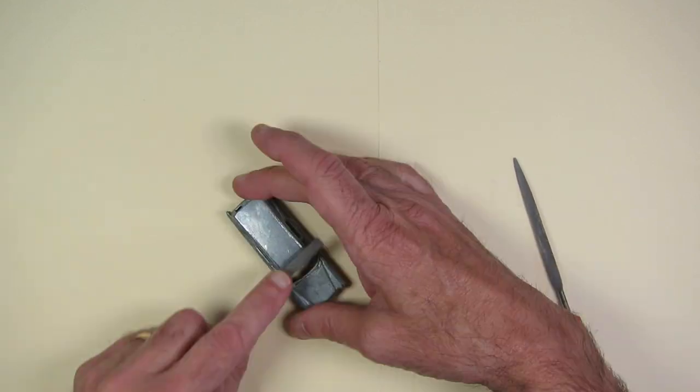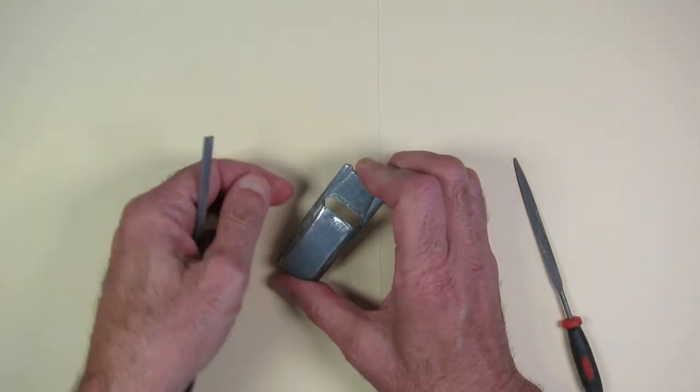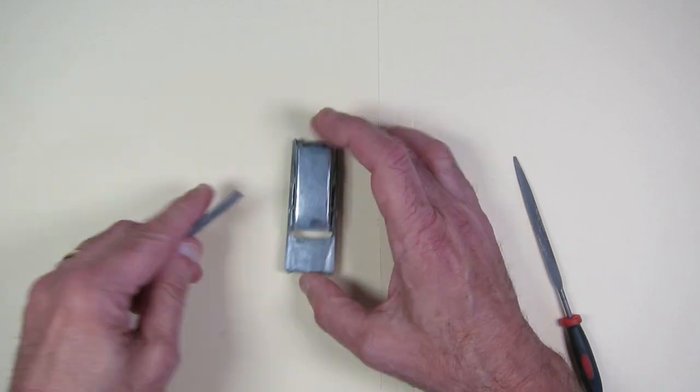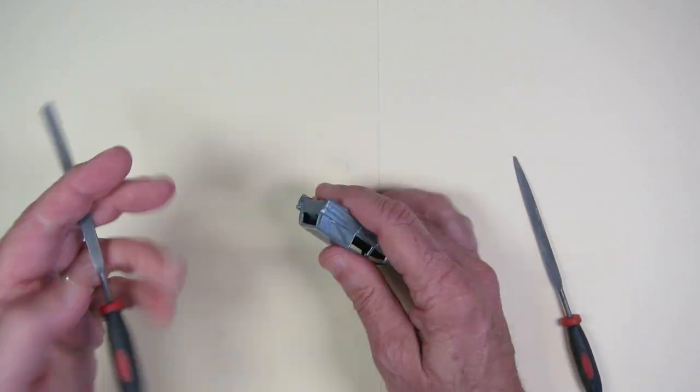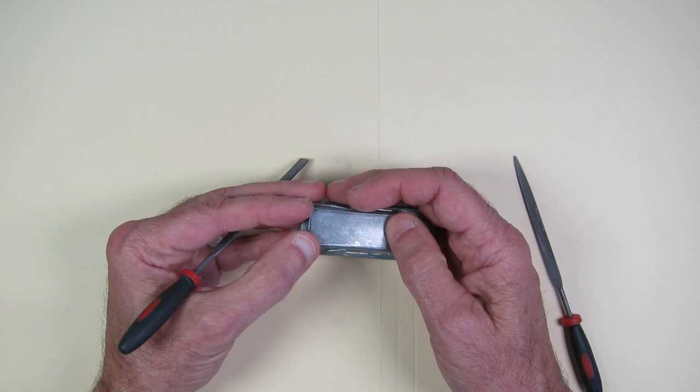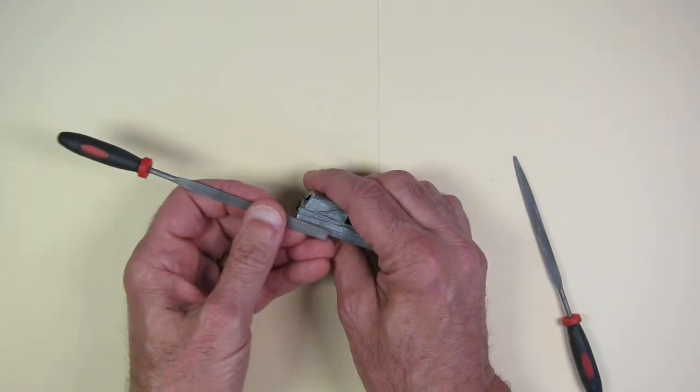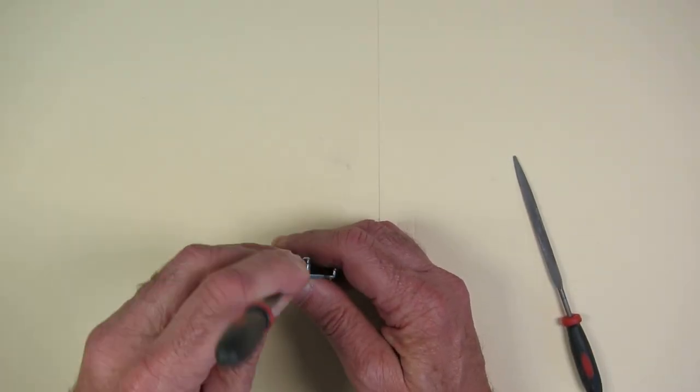I cleaned the casting up, got rid of some of the casting lines, cleaned up some rough areas. It's not a bad casting. It comes out of the citrus strip looking pretty good, actually.